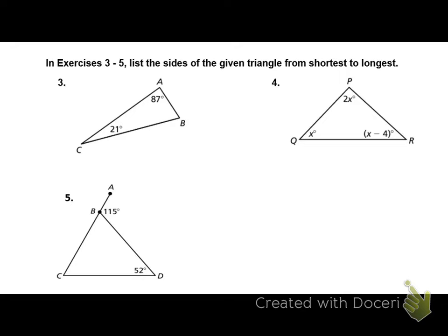Number 3, do we know everything we need to know in this triangle? We do not. How do we find the missing angle in this triangle? Add them and subtract from 180. Do the thing with the thing. What's 87 plus 21? 108. 180 minus 108 means that missing angle is 72.